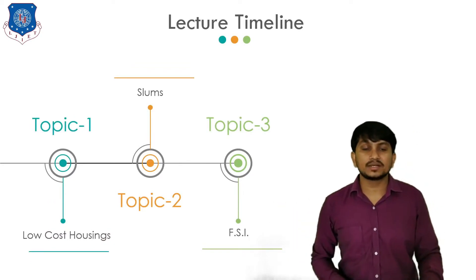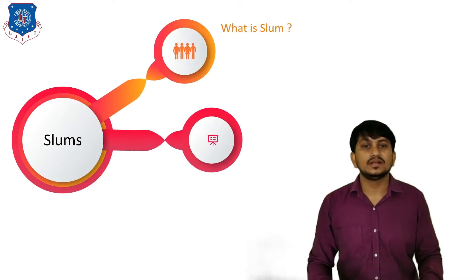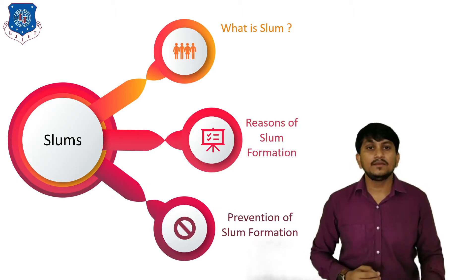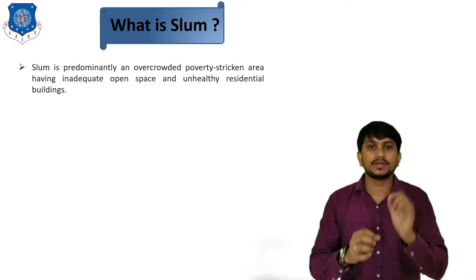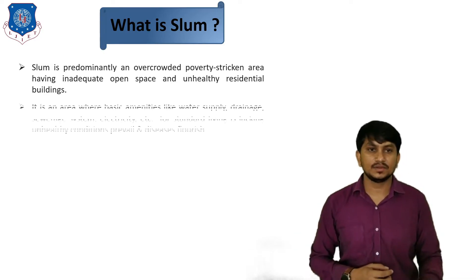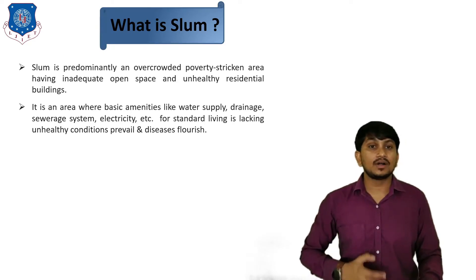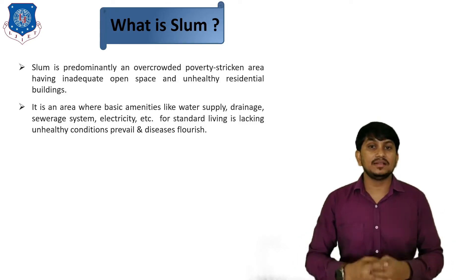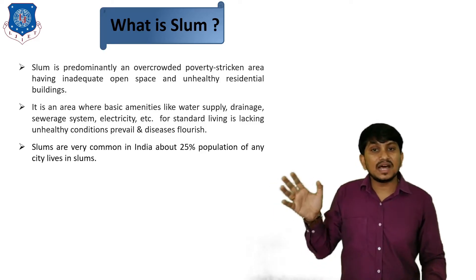Now let's move to the second topic in today's lecture, which is slum. We will cover: what is a slum, reasons of slum formation, and how you can prevent slum formation. A slum is predominantly an overcrowded, poverty-stricken area having inadequate open spaces and unhealthy living conditions. It is an area where basic amenities like water supply, drainage, service systems, and electricity for standard living are lacking. Unhealthy conditions prevail and various diseases flourish. This type of area is called a slum area.